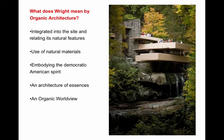We'll start with what Wright means by organic architecture — he uses the term in many different ways. I'm going to suggest that the last one is the most general, but the meanings include: integrated into and relating to the natural features of the site, use of natural materials, embodying the democratic American spirit, an architecture of essences, and an organic worldview.